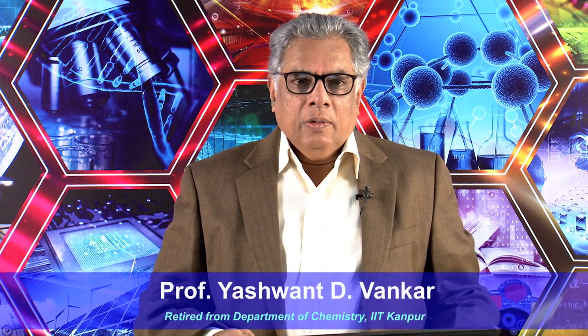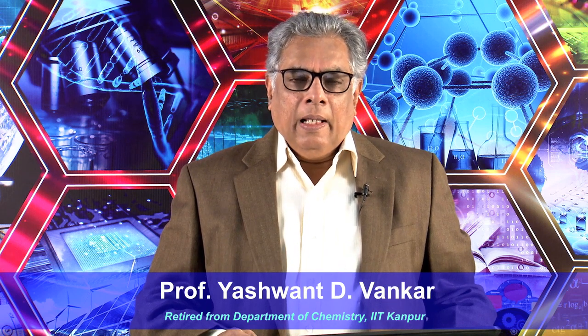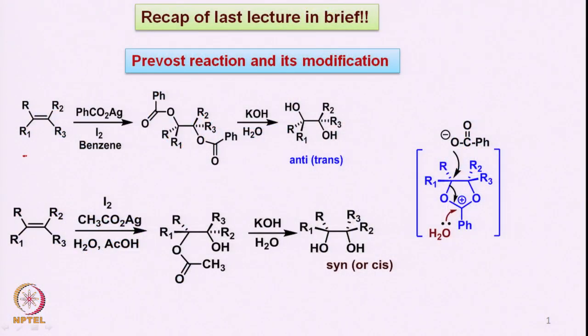Hello everyone, welcome to today's lecture. We will have a brief recap of last lecture and then proceed with the remaining part of the oxidation. Last time we introduced the Prevost reaction and its modification: starting with an olefin, in the presence of silver acetate and iodine, we eventually get a trans or anti-diol.